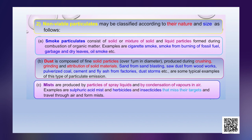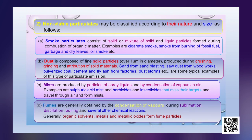The mists are produced by particles of spray liquids and by condensation of vapours in the air. Examples are sulfuric acid mist and herbicides and insecticides that miss their targets and travel through the air to form mists. Fumes are generally obtained by condensation of vapours during sublimation, distillation, boiling and several other chemical reactions. Generally, organic solvents, metals and metal oxides form fume particles.